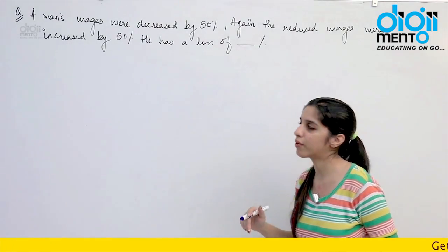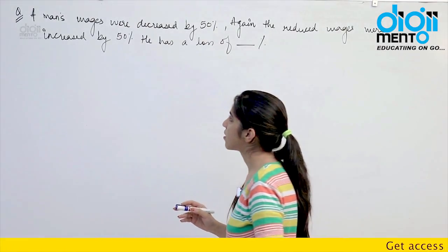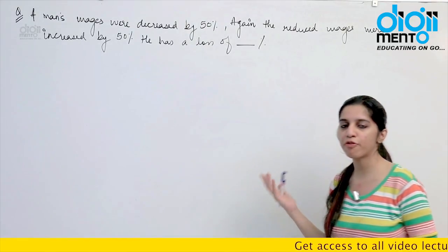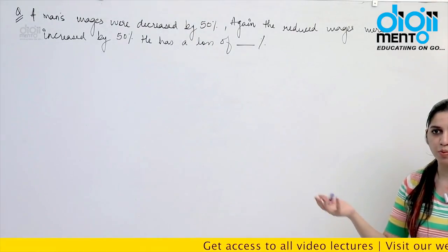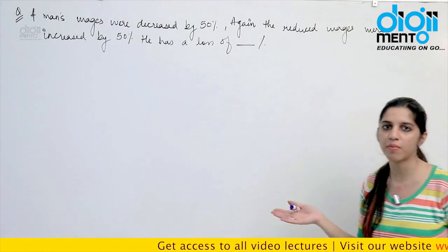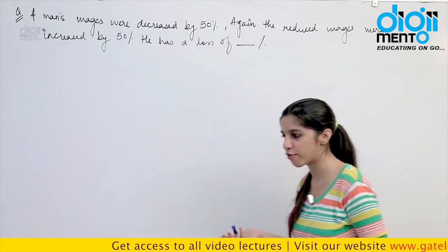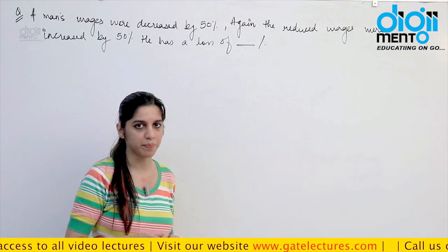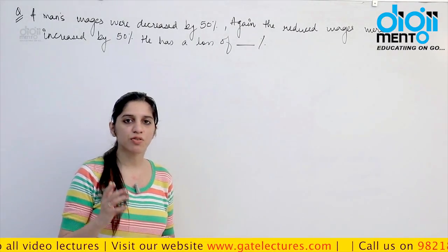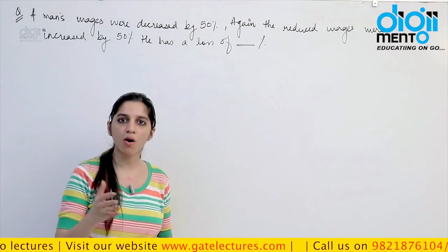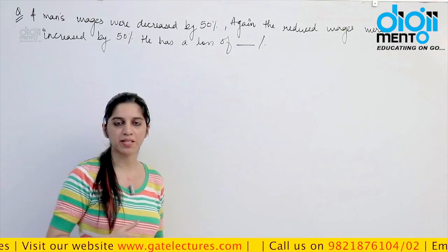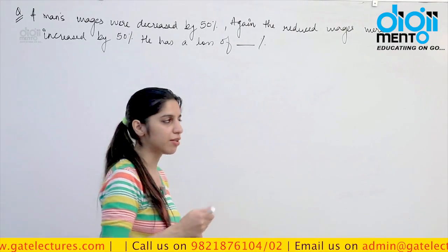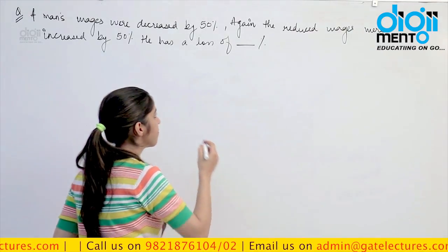Look at the first question. They say that a man's wages were decreased by 50% first, then the final amount was increased by 50%. They are asking you the total loss that he suffered. When we saw the basics of percentages, we saw that there is a formula to find the final wages, so I am using that directly.